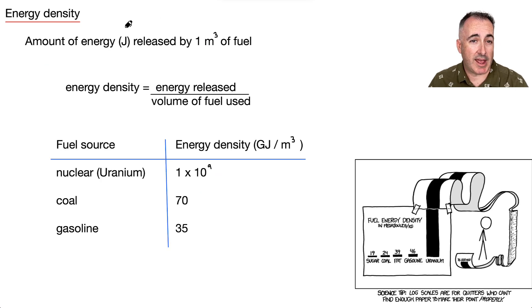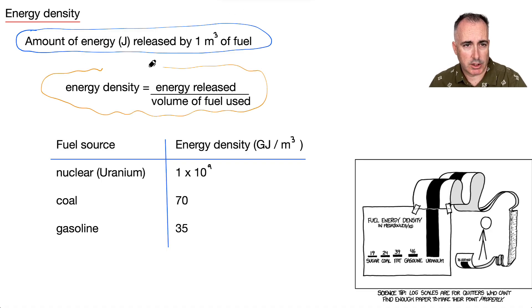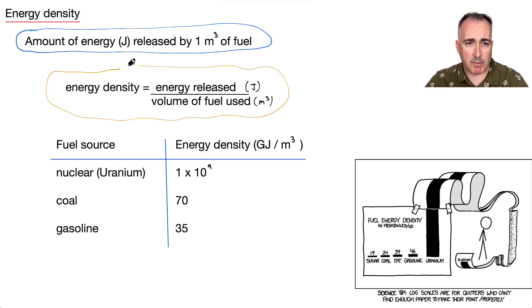Now let's talk about energy density. The energy density is defined as the amount of energy released by one meter cubed of fuel. In other words, it's energy over volume. This is really important, you should probably try to memorize it. Energy released is in joules, and volume of fuel used is in meters cubed. So the answer should be joules per meters cubed.